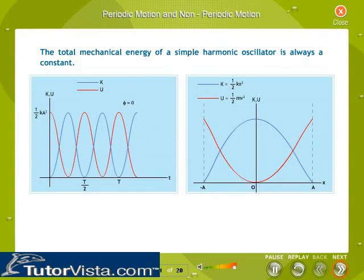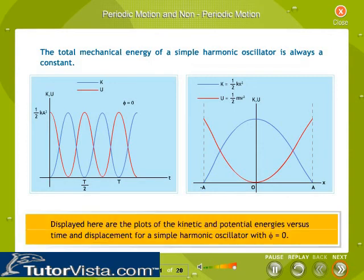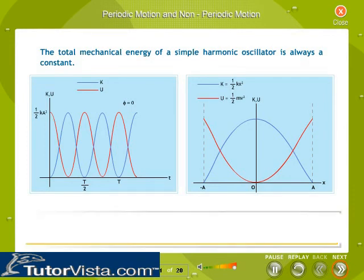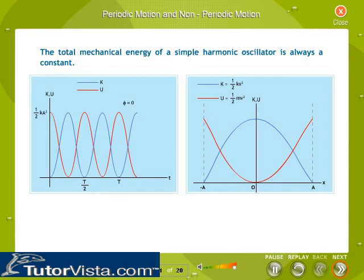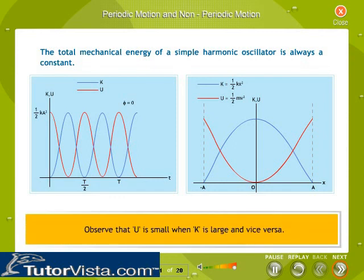The total mechanical energy of a simple harmonic oscillator is always a constant. Displayed here are the plots of the kinetic and potential energies versus time and displacement for a simple harmonic oscillator with φ equal to zero. Observe that potential energy u is small when kinetic energy k is large, and vice versa.